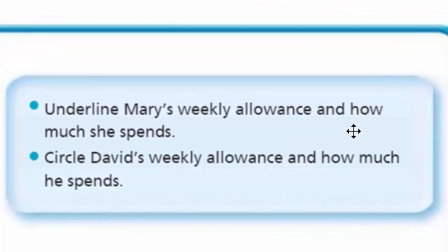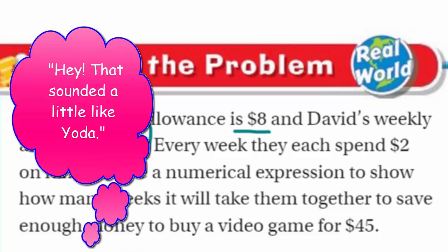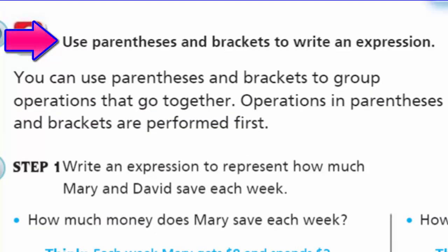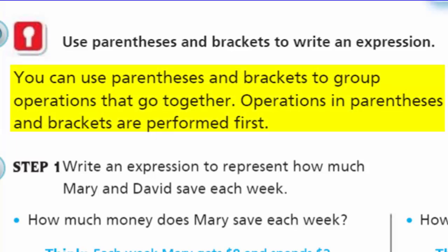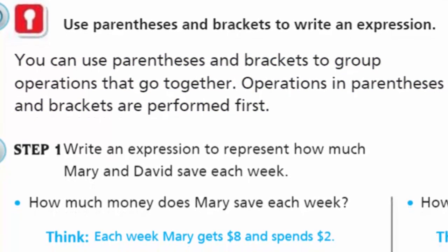They're giving us some help: underline Mary's weekly allowance and how much she spends, and circle David's weekly allowance and how much he spends. So Mary's allowance is eight dollars and David's weekly allowance is five dollars. It says use parentheses and brackets to write an expression - operations in parentheses and brackets are performed first.